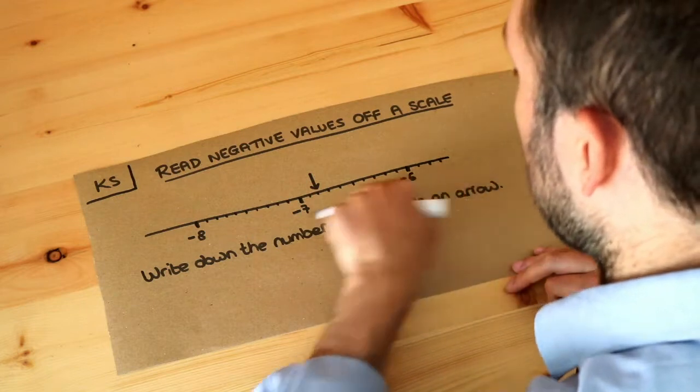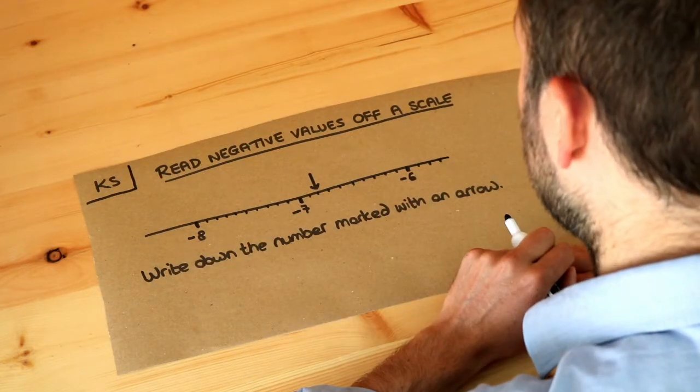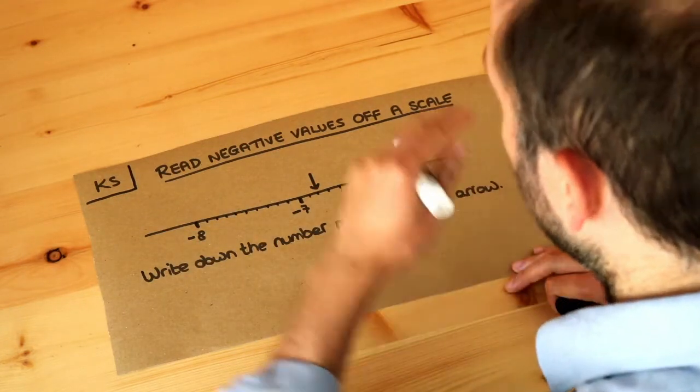Hopefully you've seen my previous videos on how we read values off a scale. The only difference here is that the values on the scale are negative.